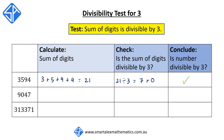Second example, 9047. First, we're going to calculate the sum of the digits. 9 plus 0 plus 4 plus 7 is equal to 20. We then check if this sum of 20 is divisible by 3. 20 divided by 3 is 6 with a remainder of 2. Since there's a remainder of 2, this tells us that the sum of the digits isn't divisible by 3, and therefore 9047 isn't divisible by 3.